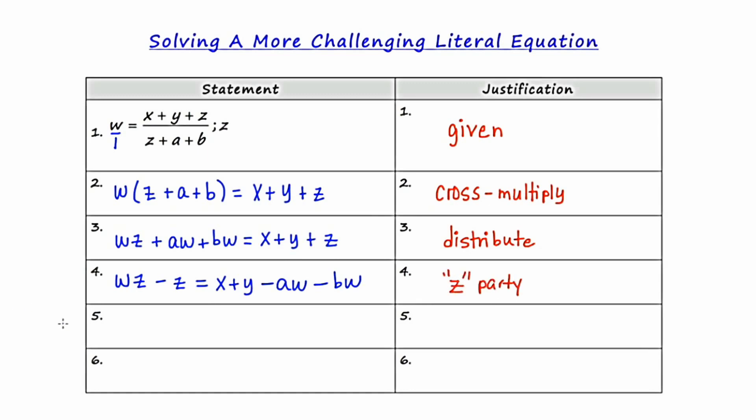Now to transition from step four to step five, I'm going to factor out the Z from the left hand side. Notice that on the left hand side, there are two Zs. And my objective is to solve for Z. I've got to get it by itself. I've got to get it isolated. So to get it isolated, being that there are two of them, I'm going to factor out what's common, and what's common is the Z. So I'm going to take the Z out, and I'm going to be left with an expression W minus one.